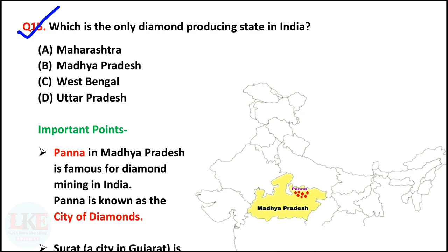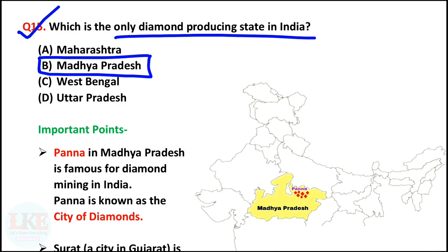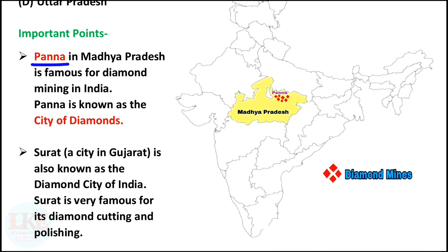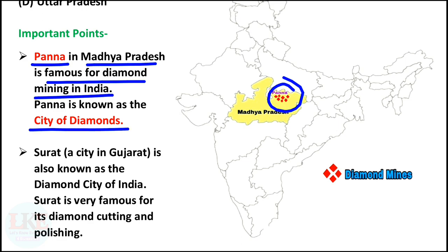Last and final question, number 15: which is the only diamond-producing state in India? Right answer option B: Madhya Pradesh. Madhya Pradesh is the only Indian state that produces diamonds. Panna in Madhya Pradesh is famous for diamond mining and is known as the city of diamonds. For your information, Surat in Gujarat is also known as the diamond city of India, and is very famous for its diamond cutting and polishing.